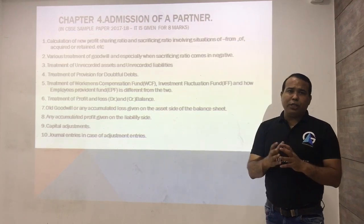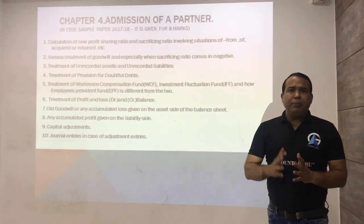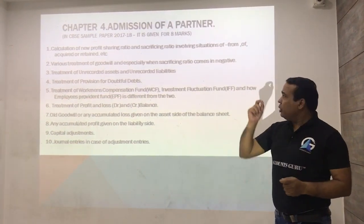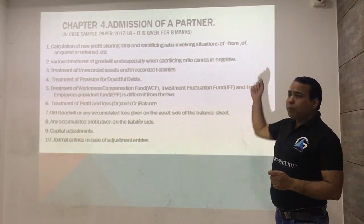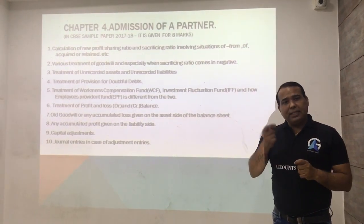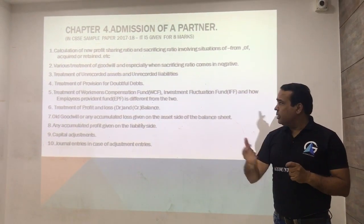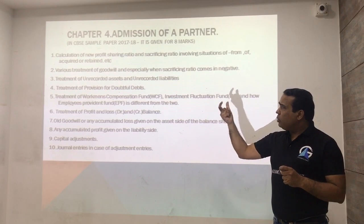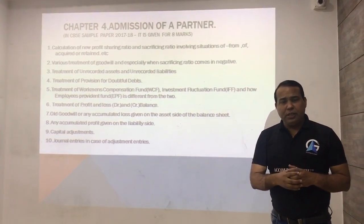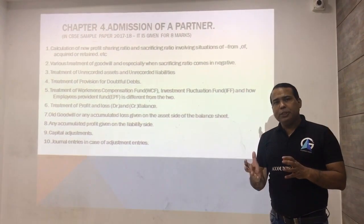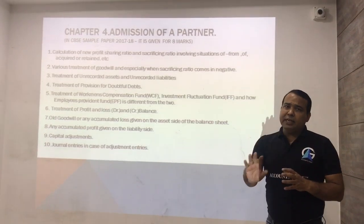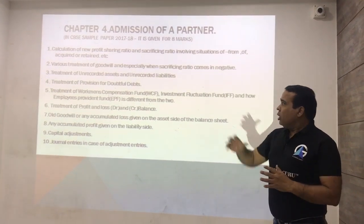The words 'off,' 'from,' 'acquired,' and 'retained' are very important when calculating the new ratio and sacrificing ratio. 'From' means minus. 'Off' means multiply by the sacrificing ratio. When the word 'acquired' is used, it refers to the sacrifice ratio. In the 'retained' case, if another partner says they need to retain their share, that is treated differently.